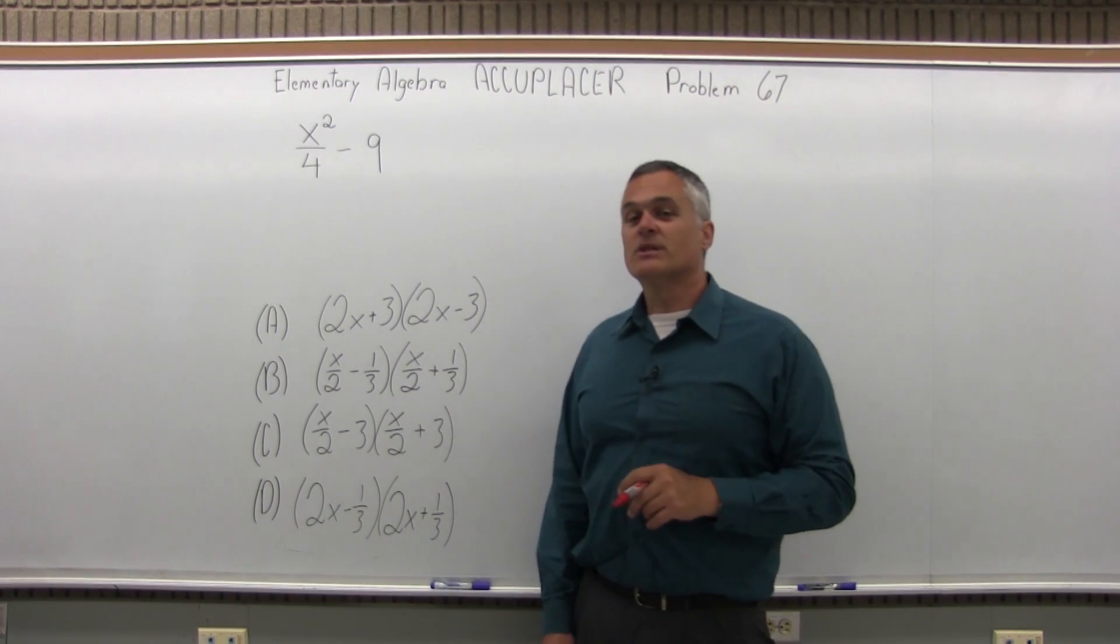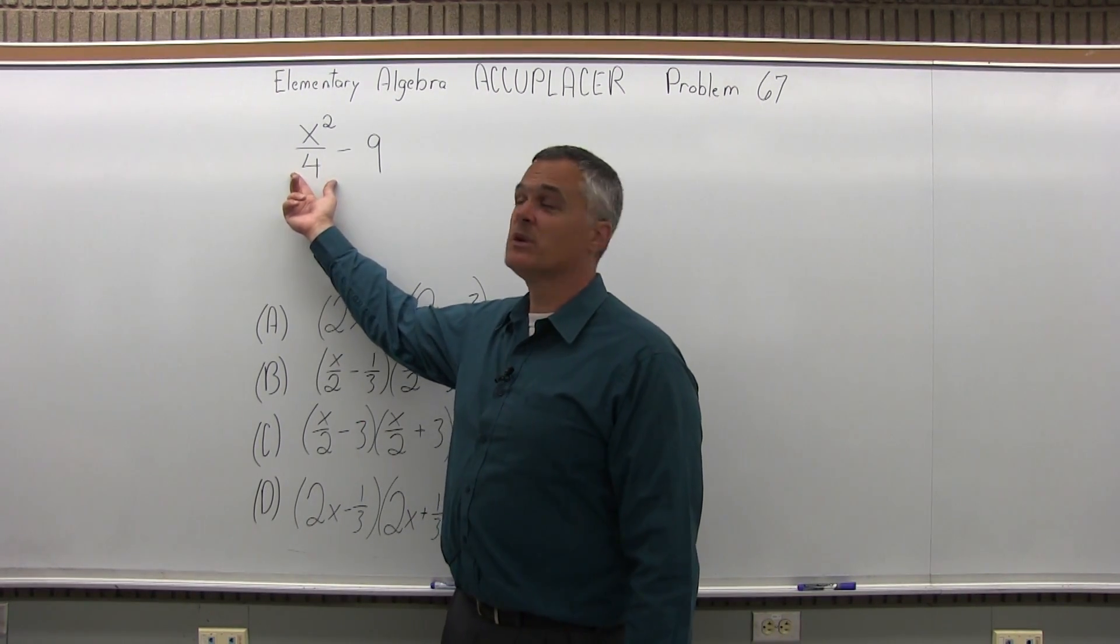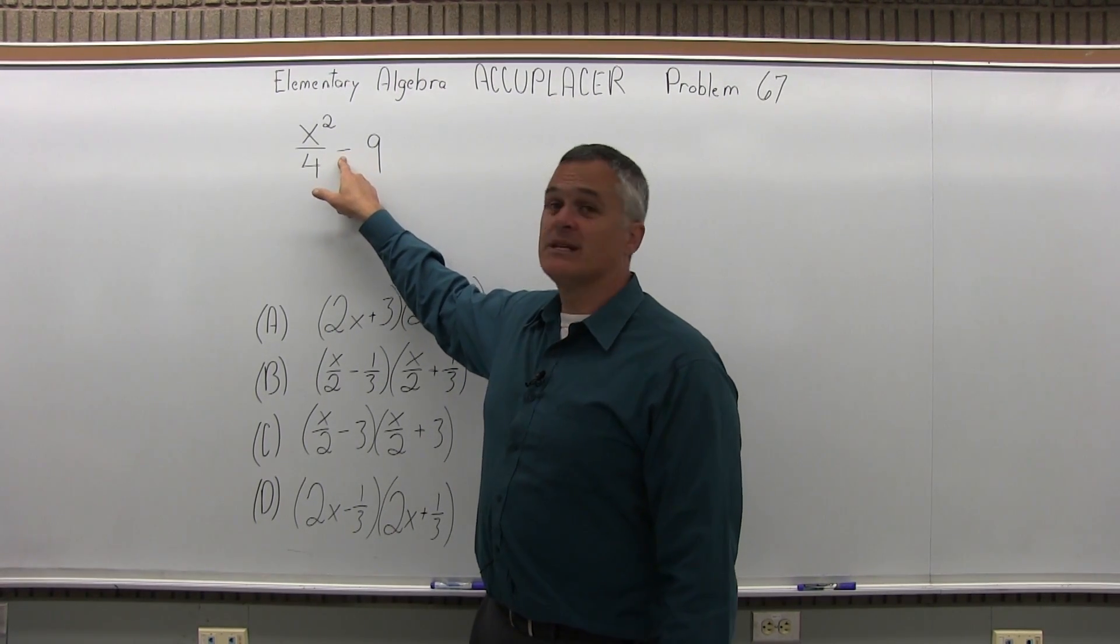What you need to notice is that this is a difference of squares, which means the first piece has a nice perfect square root, the second piece has a nice perfect square root, and it's a minus in between.